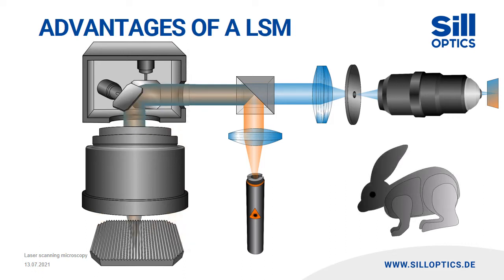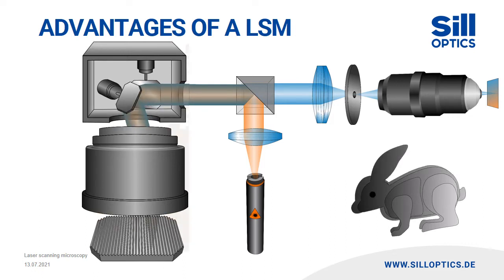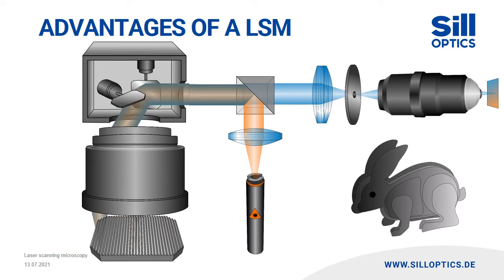If the scan lens or the sample are shifted slightly in the z-direction, a new focal plane can be seen and a three-dimensional image can be calculated by stitching. This is a feature of the laser scanning microscope which is not possible with conventional light microscopy.